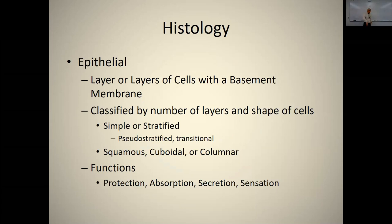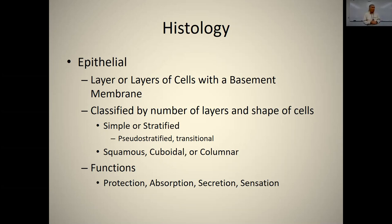Let's look at epithelial tissue first. It consists of a layer or layers of cells with a basement membrane, which is composed of glycoproteins. Epithelial tissue has an apical surface that lines some body cavity or the outside, and a basal surface that faces the blood side.